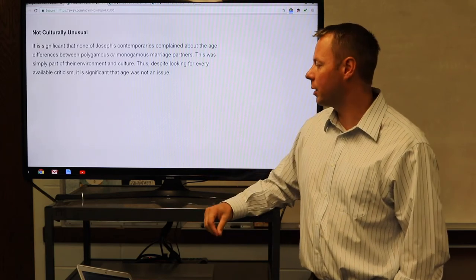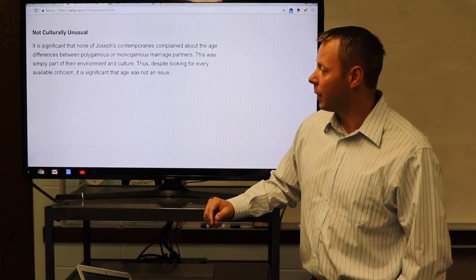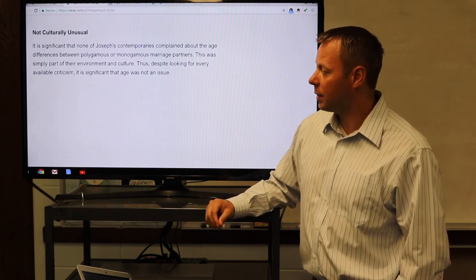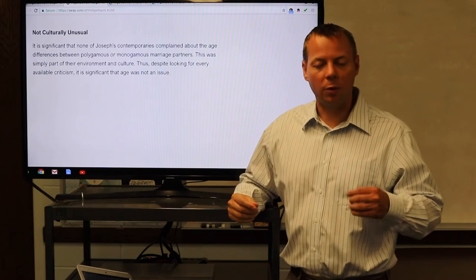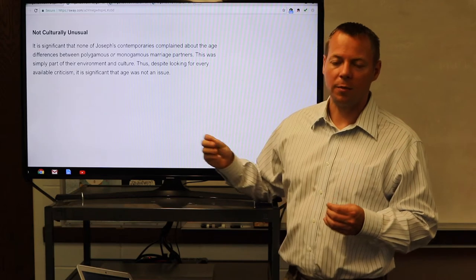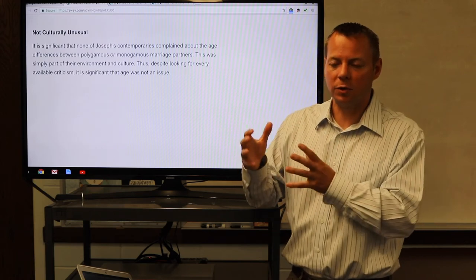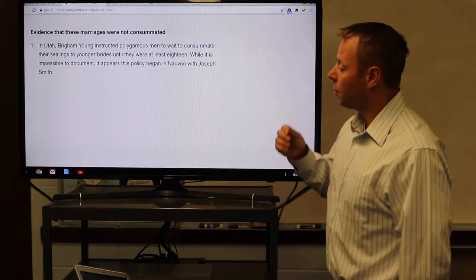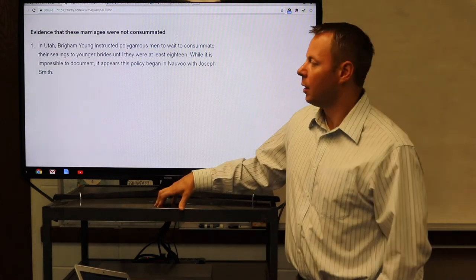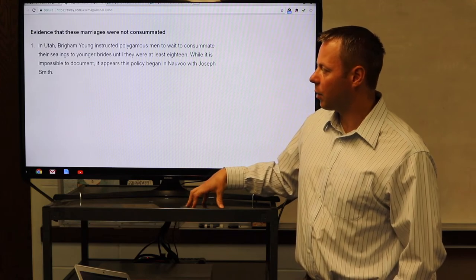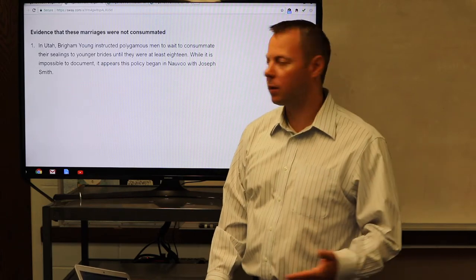All of these marriages did have approval of their parents. Some states certainly allow, even today, this type of marriage age, assuming that there's approval of their parents. These marriages were legal. They were also not culturally unusual. It's significant that none of Joseph's contemporaries complained about the age differences between polygamous or monogamous marriage partners. This was simply part of their environment and culture. Despite looking for every available criticism, it is significant that age was not an issue. If it had been as culturally inappropriate as it is in our day, they would have called it out in their day. His contemporaries were looking for criticisms; they certainly complained about polygamy.